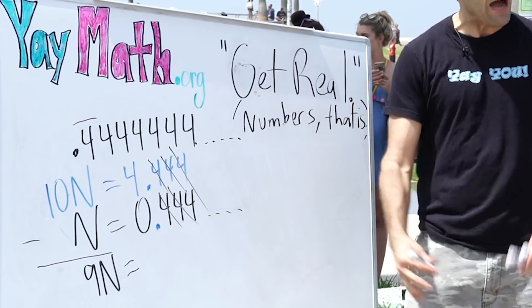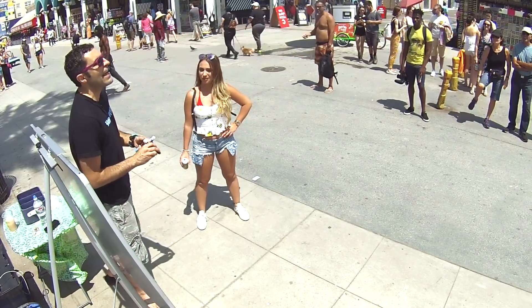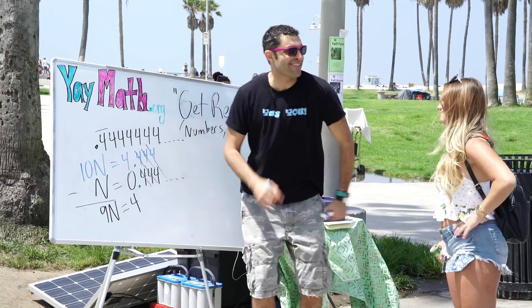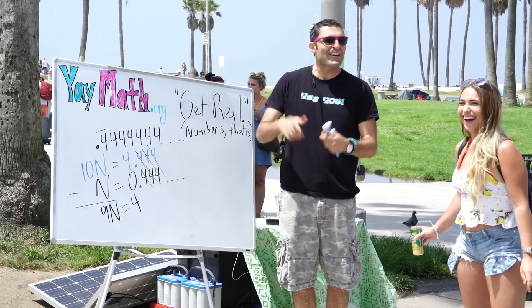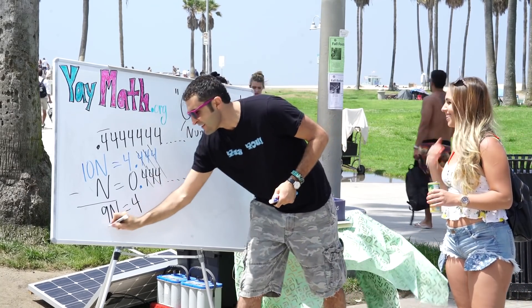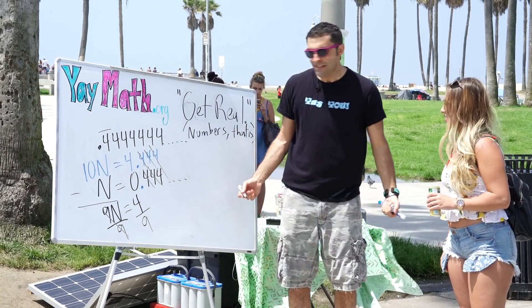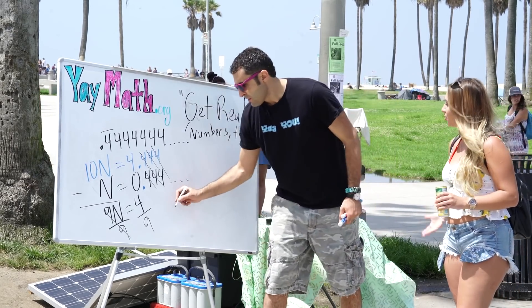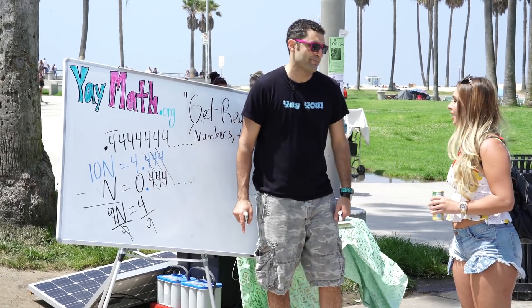So 9n = 4, which means n = 4 over 9. To get n by itself, you divide both sides by 9 — put it over 9. The crowd knows it! Margarita gets a round of applause. Can we simplify 4/9 further? We could divide 4 by 2, but we can't divide 9 by 2 evenly, so we leave it as 4 over 9.